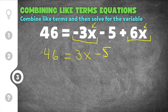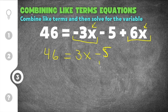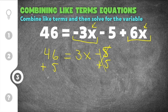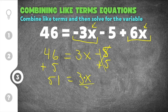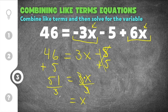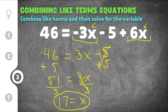The next step is to get constants on one side and the variable on the other. The variable is on the right, so I need to move the minus 5 to the left. The opposite of minus 5 is plus 5, so I add 5 to both sides: 46 plus 5 is 51, giving us 51 equals 3x. Since 3x means 3 times x, I divide both sides by 3: the 3s cancel, and 51 divided by 3 is 17. So the solution is x equals 17.